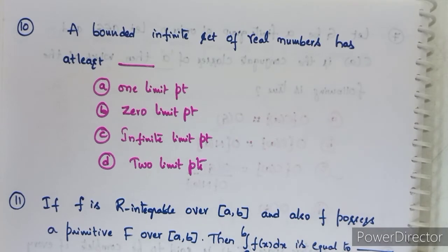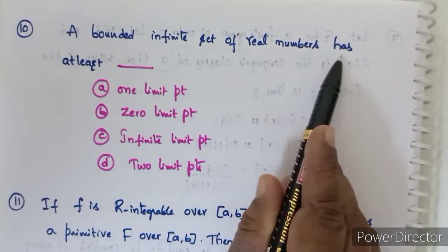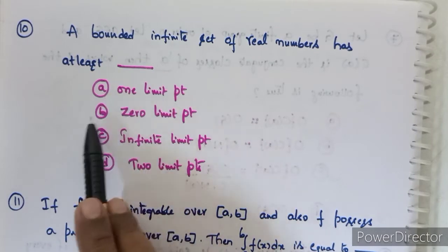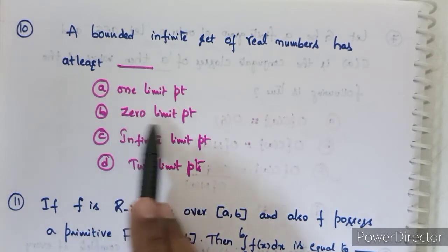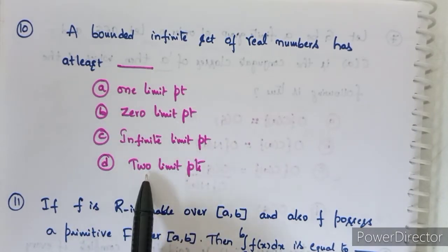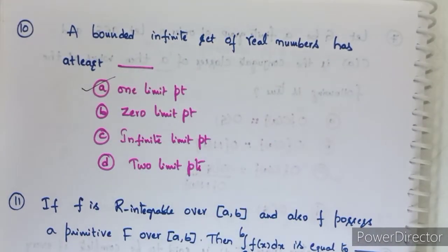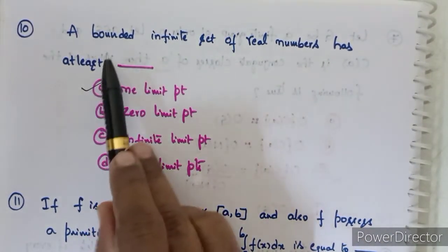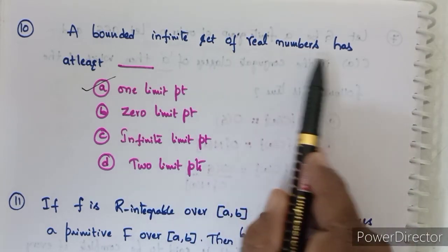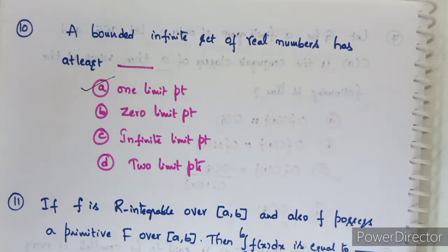Tenth question: a bounded infinite set of real numbers has at least — one limit point, zero limit points, infinitely many limit points, or two limit points? By the Bolzano-Weierstrass theorem, every bounded infinite set of real numbers has at least one limit point. Option A is correct.